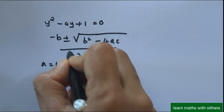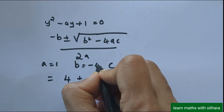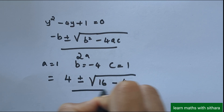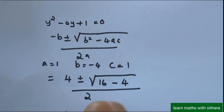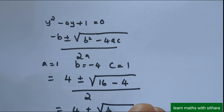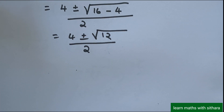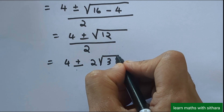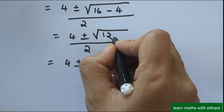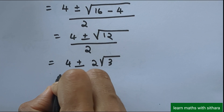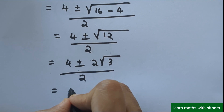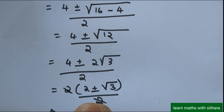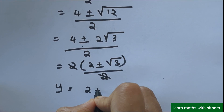Substituting: 4 ± √(16 − 4 × 1 × 1) divided by 2 × 1, which gives 4 ± √12 divided by 2. Since √12 = 2√3, this becomes (4 ± 2√3) / 2. Taking 2 as common and cancelling, we get y = 2 ± √3.